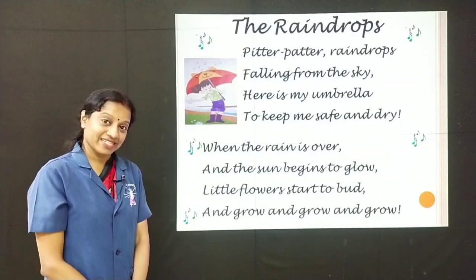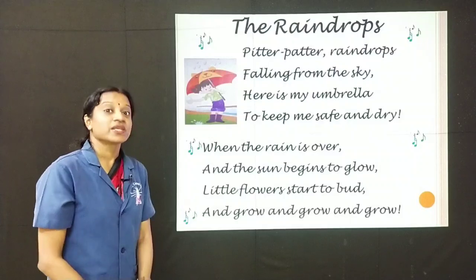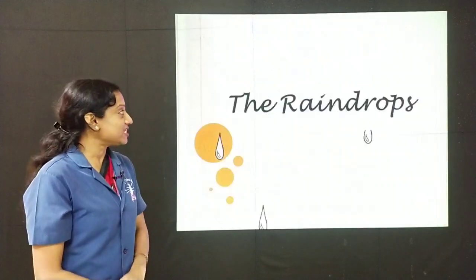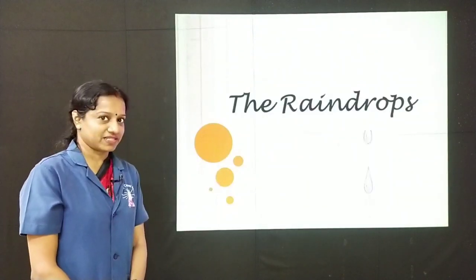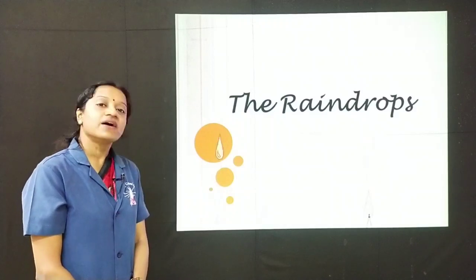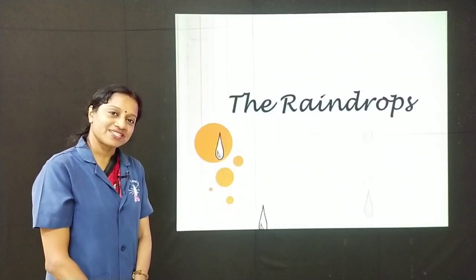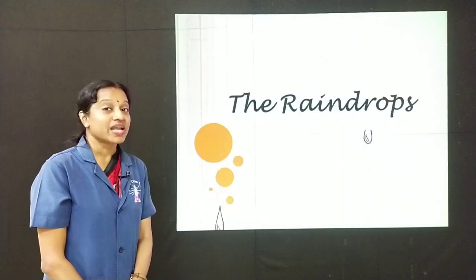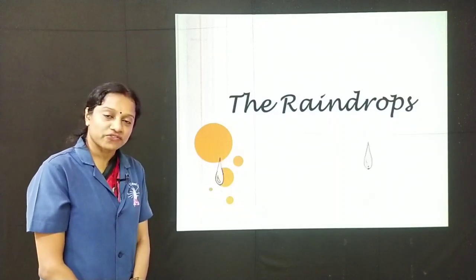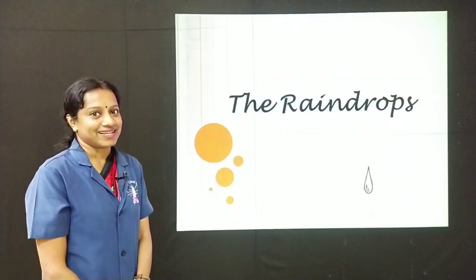So children, you must have learned to sing it now. Now let us go to the explanation part. I am going to explain it for you. The Raindrops — what are raindrops, children? Raindrops are the drops of rain that fall from the sky.